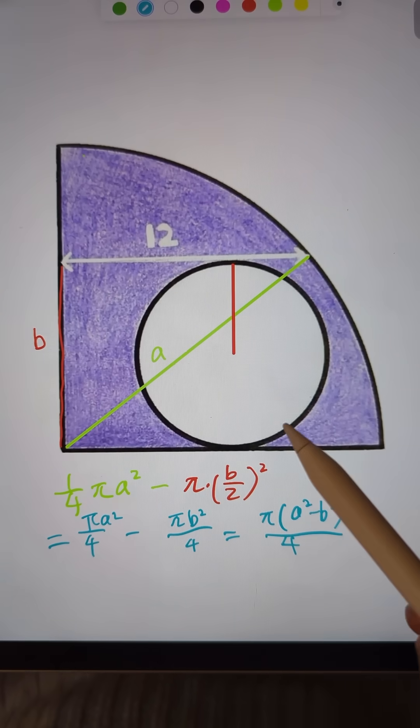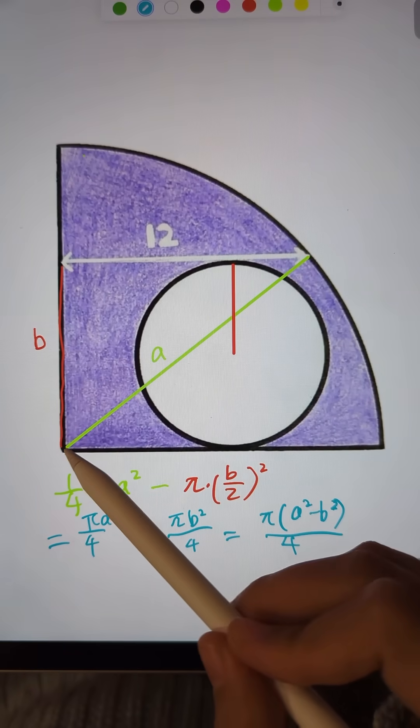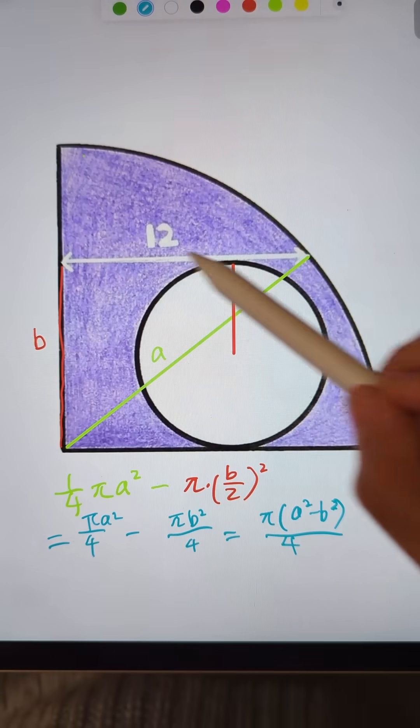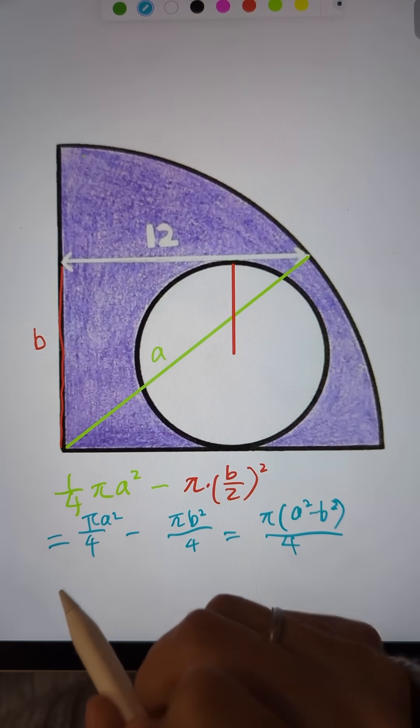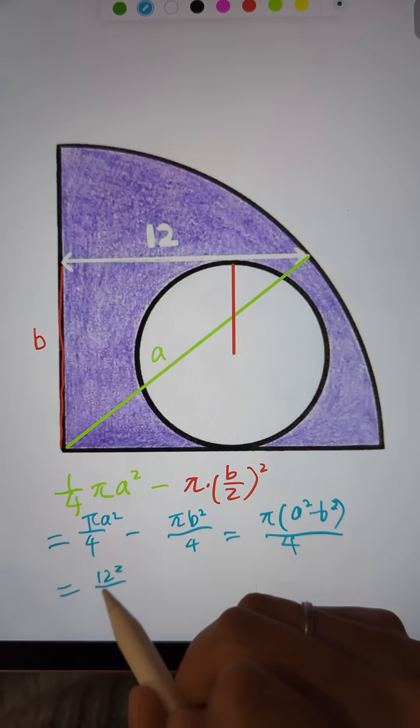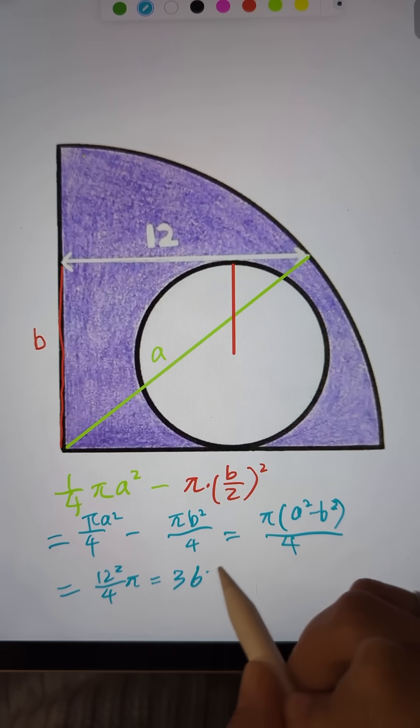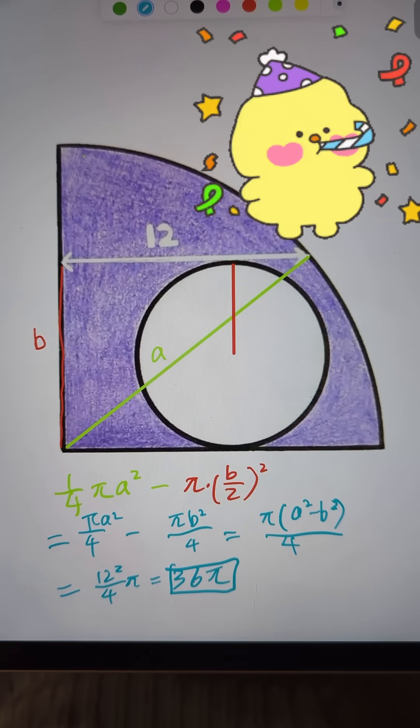And what is a squared minus b squared? Well, notice that this is a right triangle. A squared minus b squared equals 12 squared by Pythagorean theorem. This is 36 pi. We got it!